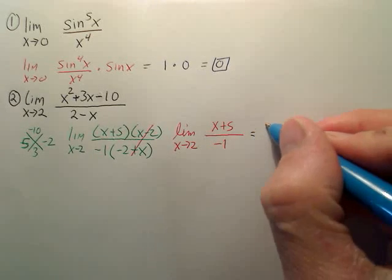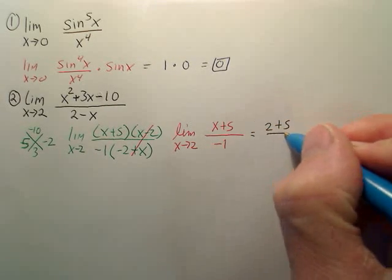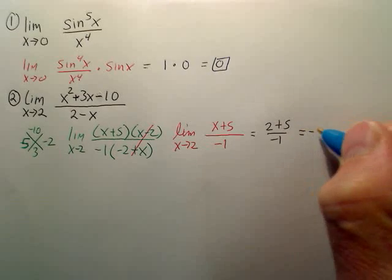So the answer is simply going to be 2 plus 5 divided by negative 1, which is negative 7.